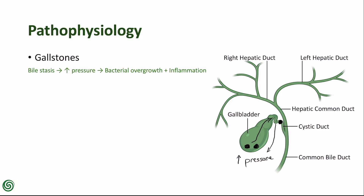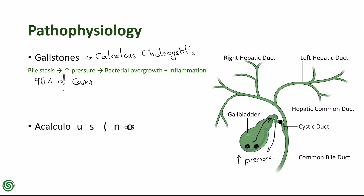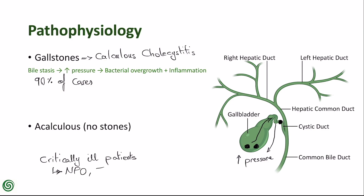This is the typical pathogenesis in calculus cholecystitis, which accounts for over 90% of cases. Acalculous cholecystitis, on the other hand, is more often seen in critically ill patients, especially those who are nil by mouth (NPO) or on long-term total parenteral nutrition (TPN).